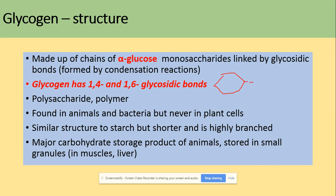This glycosidic bond can be made between carbon number one and carbon number four, or between carbon number one and carbon number six — that's the linkage. It's of course a polysaccharide, a polymer made of many alpha glucoses. It's found in animals and bacteria, but never in plants. It's similar in structure to starch, but there are differences. It is the major carbohydrate storage product of animals, stored in small granules found in muscle or liver.